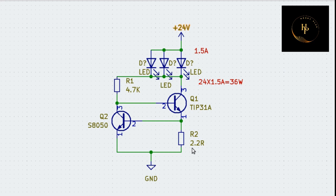The supply voltage is 24 volt. The collector-to-emitter voltage drop is about 0.2 volt — don't worry about it, just calculate with 24 volt directly. 24 volt divided by 2.2 ohms gives you the current in ampere. The second resistance is the supply voltage to the base of Q1, which is used to turn on the transistor and also to control the current as a switch.